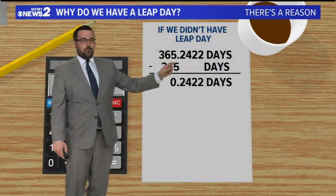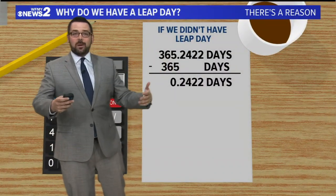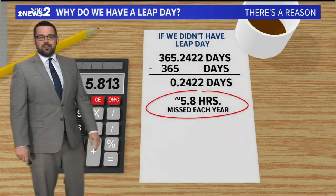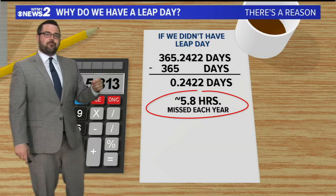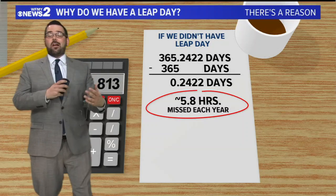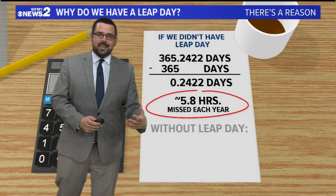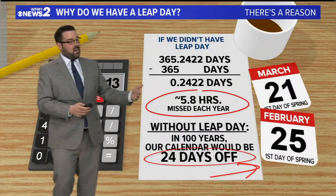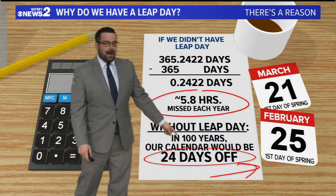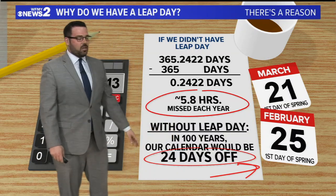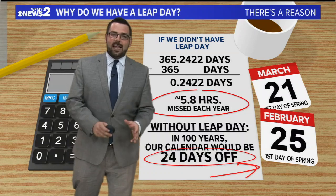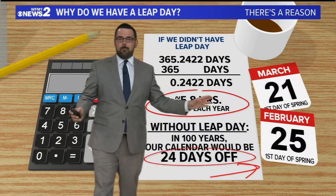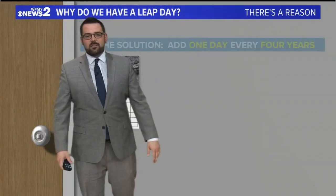That .2422 extra is very important. What that is — if you do the math and calculate it out — we have an extra 5.8 hours that aren't accounted for each year. So our calendar year is too short. And if we kept that going over time, in 100 years our calendar will be off by 24 days. So March 21st would end up being February 25th. It'd be a big mess — our seasons wouldn't be the same. So we've got to fix it.